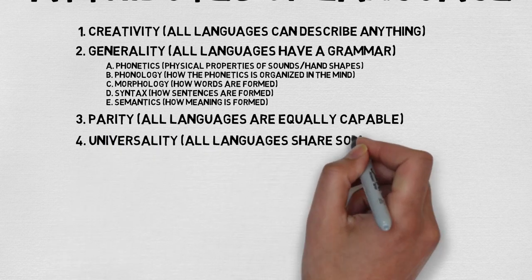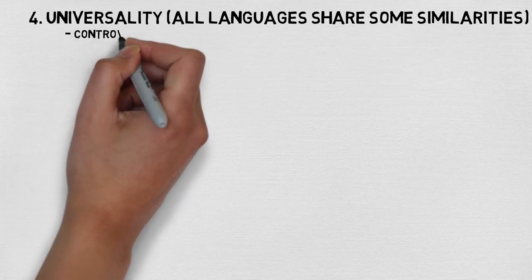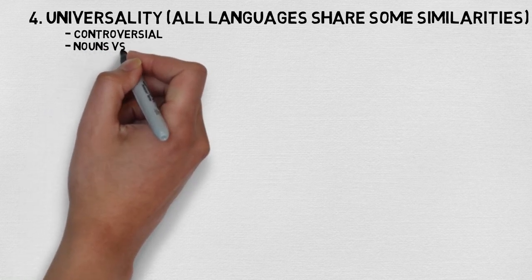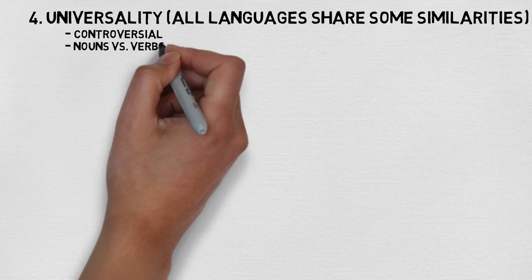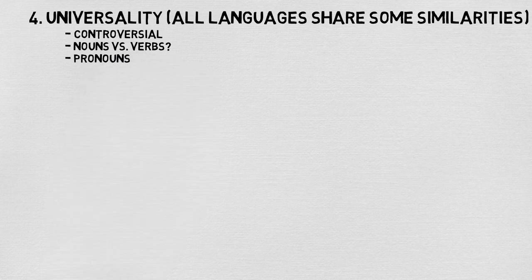Number four is universality. This topic is a controversial one, as true universals — things that occur in all languages — seem relatively rare. There are over 7,000 languages in the world, so it's relatively difficult to find something common across all of them. According to some, all languages distinguish between nouns and verbs, although this claim is not universally agreed upon, as there are some indigenous languages of Canada and the United States that seem not to treat nouns and verbs any differently. One universal that does seem apparent in all languages is that all languages contain pronouns or some sort of pronominal part of speech.